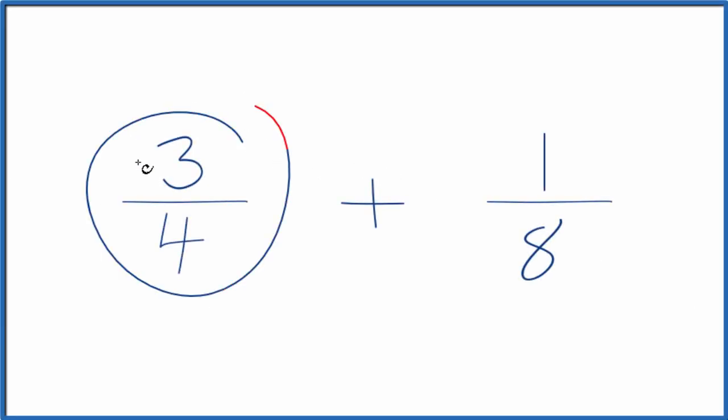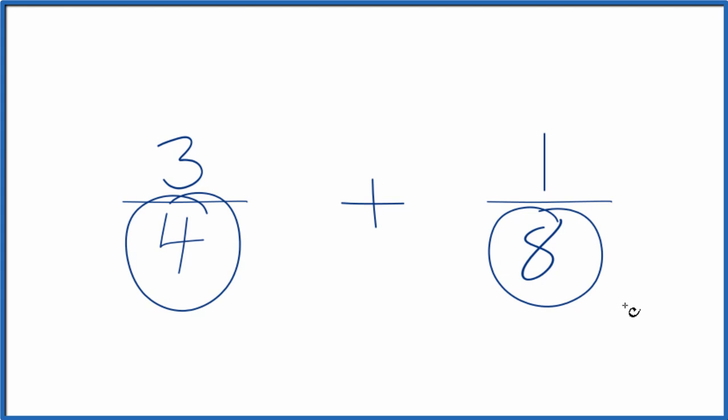Let's add the fractions 3/4 plus 1/8. And to do that, we need to get the denominator here for both fractions to be the same. Then we just add the numerators, and we'll have our answer for 3/4 plus 1/8.